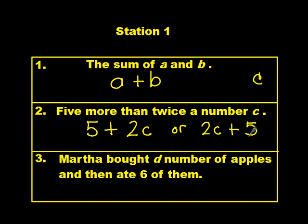Number three, Martha bought d number of apples and then ate six of them. So pause the video, solve, come back when you're ready. So Martha bought d number of apples, and ate six of them. So the answer is d minus six. So it's pretty easy, as you can see. We'll start picking up the pace. We'll move on to station two.